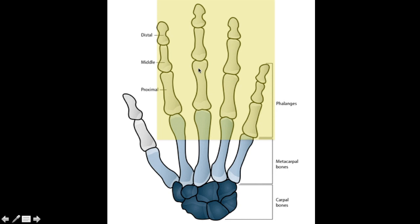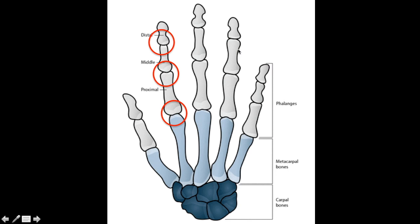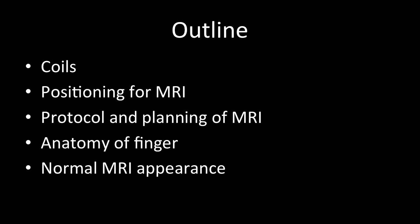Four fingers means 12 joints, which is a large number, but the good news is that if you know the anatomy across any one finger, that anatomy applies to all four fingers — they all share the same anatomy. So you only need to understand anatomy across three joints, which is one finger. We will start with the basics of how to get an MRI scan done, followed by positioning, protocol and planning, then anatomy, and finally the normal MRI appearance.